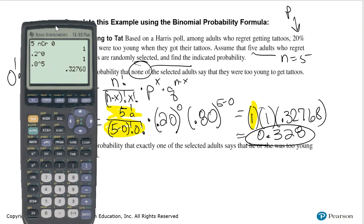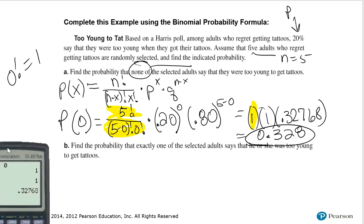I'd like you to pause the video and I'd like you to try Part B. Find the probability that exactly one of the selected adults says that he or she was too young to get tattoos. When you are done, resume the video and let's compare notes.